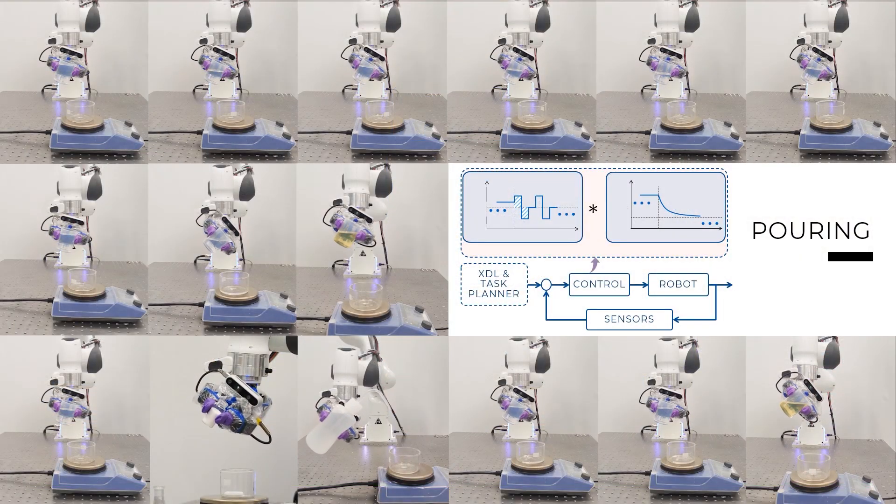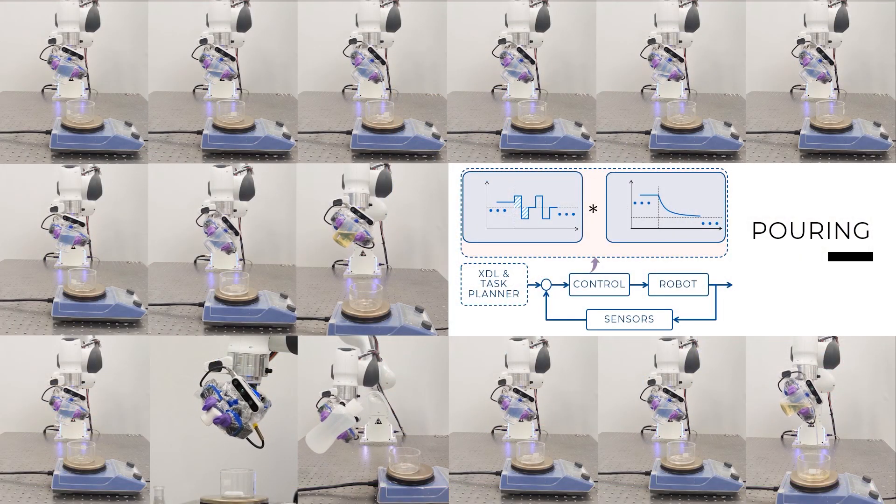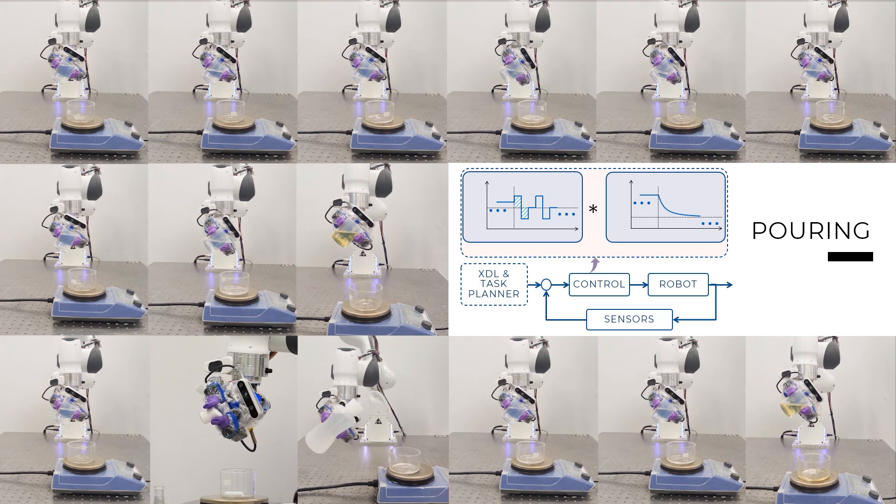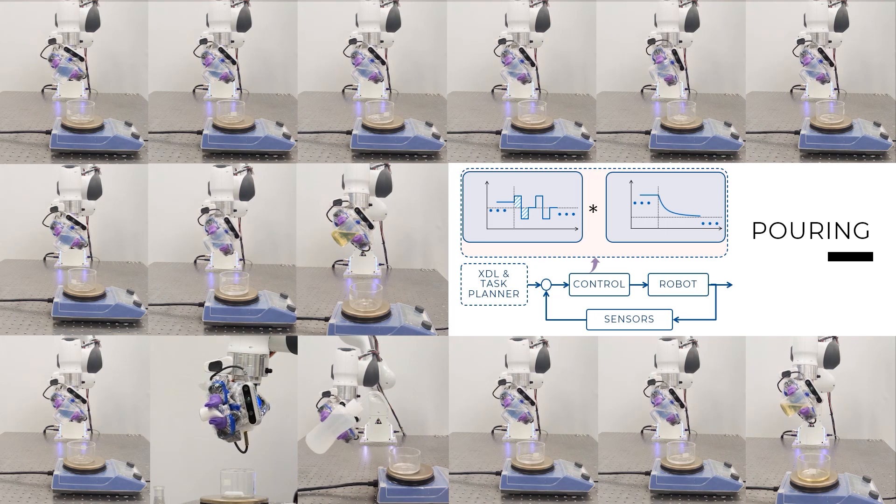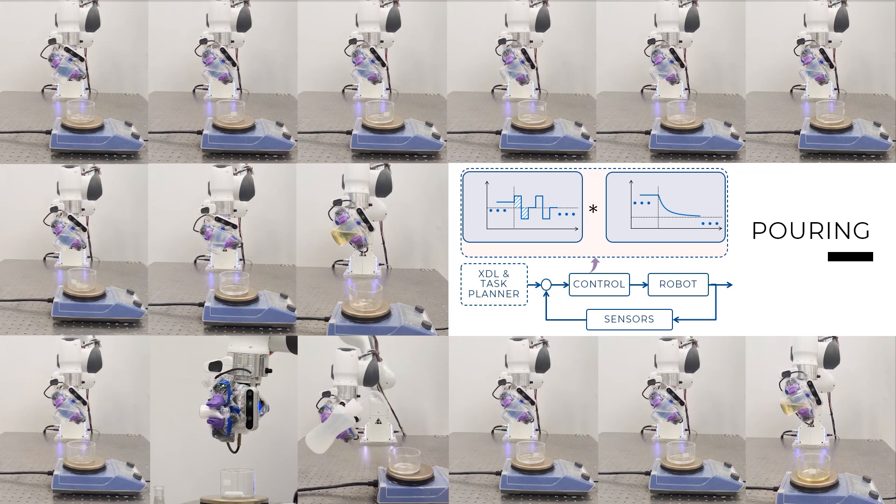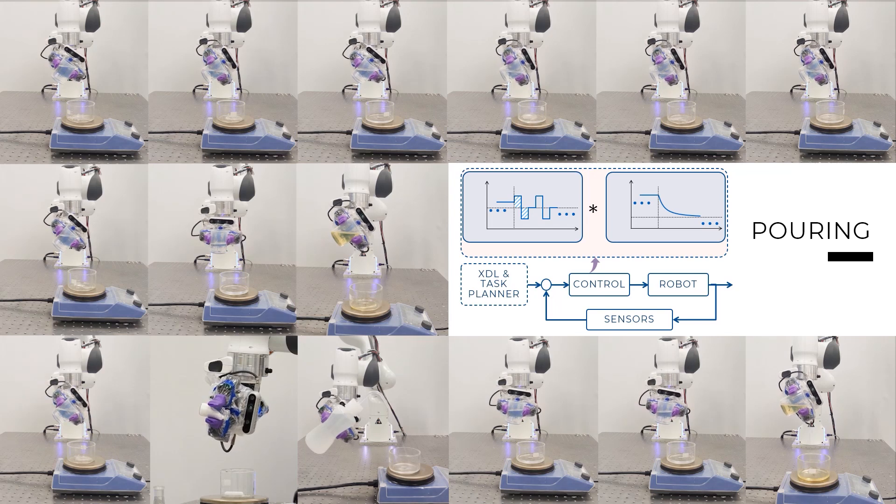We realize accurate closed-loop pouring skills by convoluting a PD controller with a shaping function that is inspired by human behavior for pouring. We use velocity control, and the variety of pouring skills can be seen in this video.